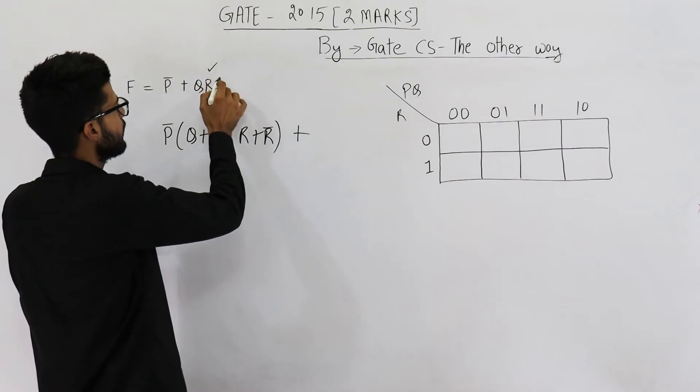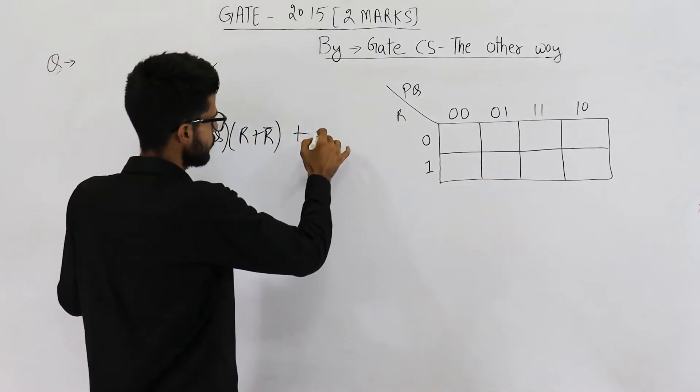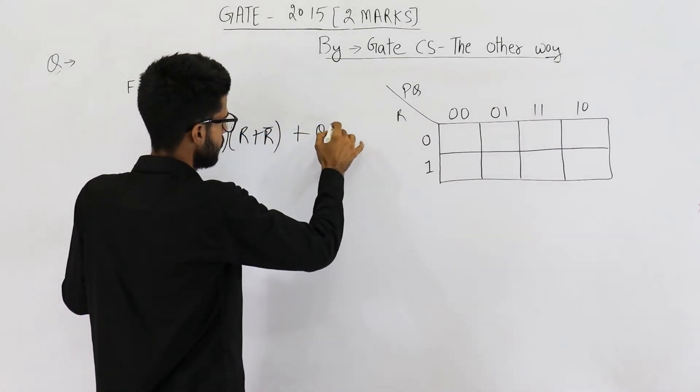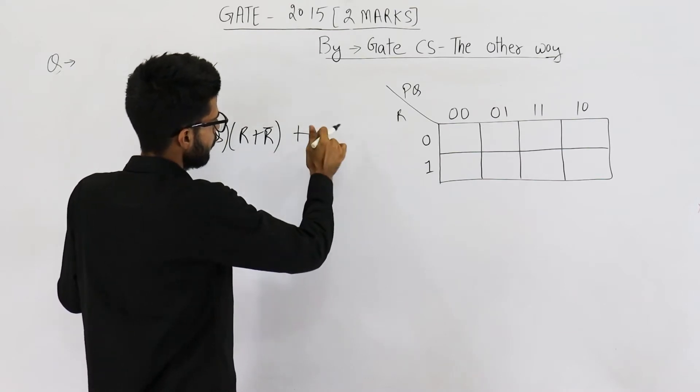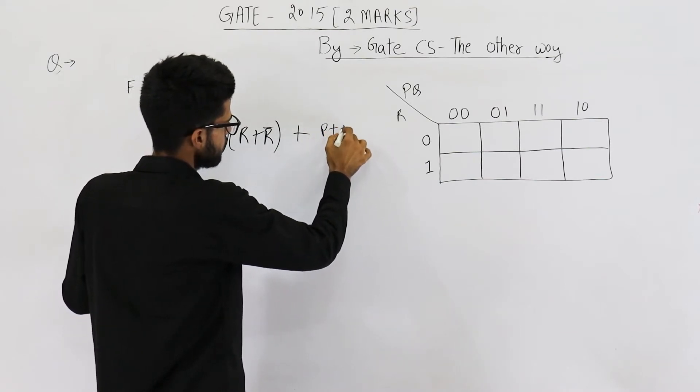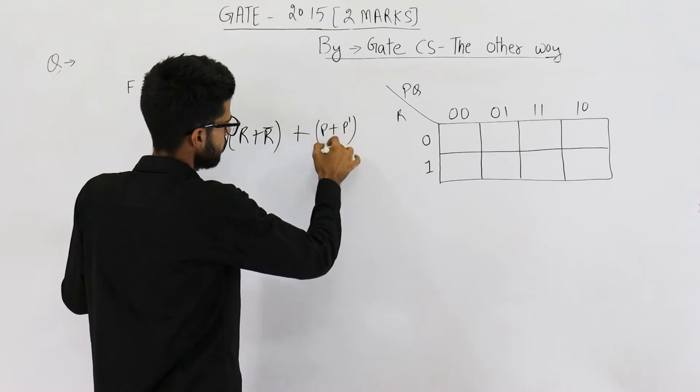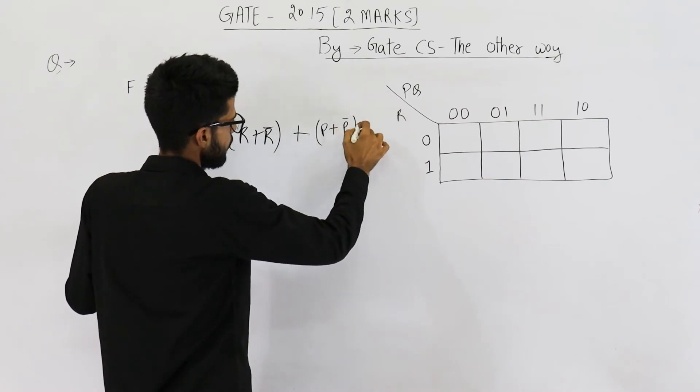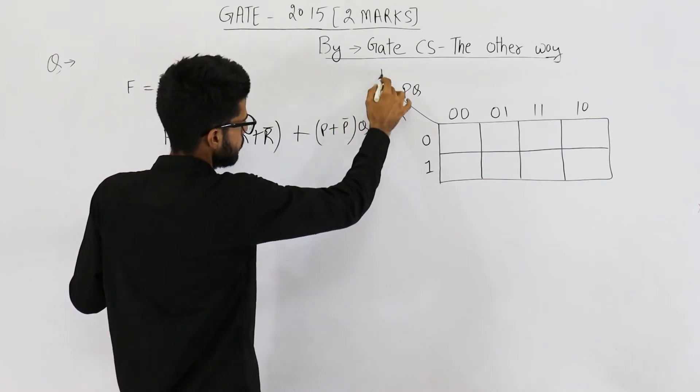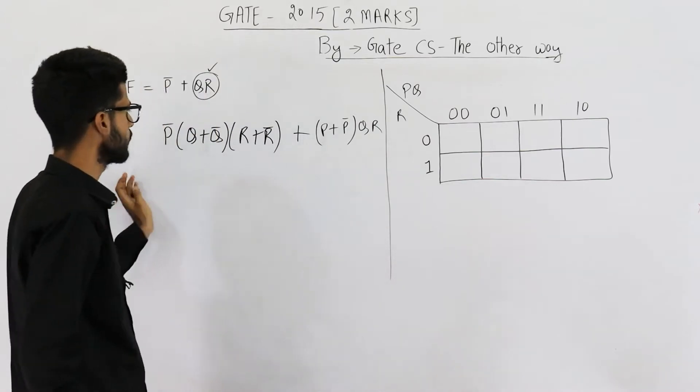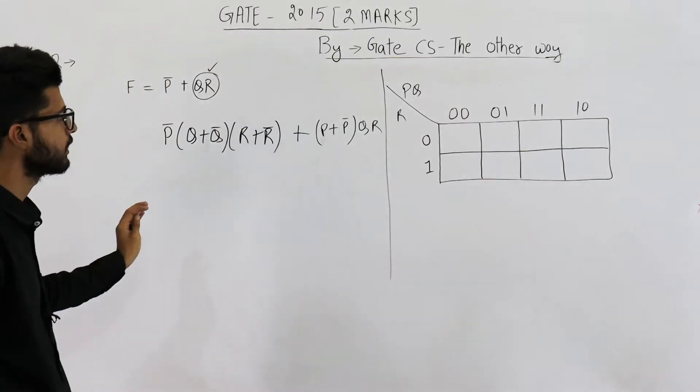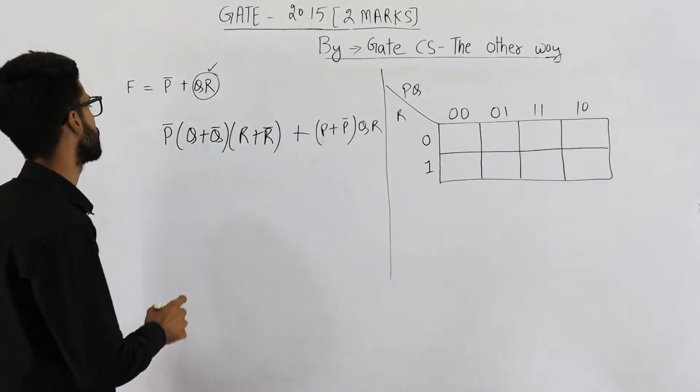Similarly, try to include P in this term also. This will become Q, sorry, it will become (P + P bar) into QR. Now you just open the brackets and you will get all the minterms, I will do that for you.